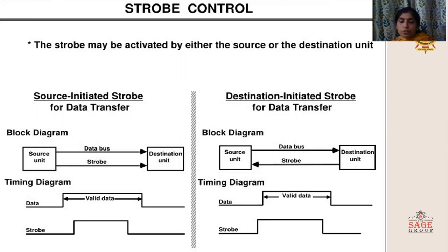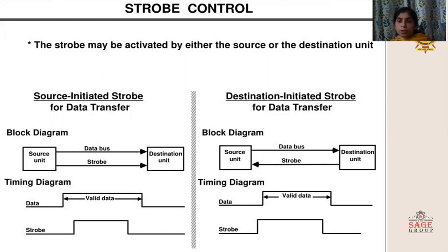In case of destination-initiated strobe, first the strobe signal will be initiated by the destination unit to indicate that it is now ready and the source can send the data. Then after that strobe signal, the source unit will start to send the data. The falling edge of the strobe signal indicates that the valid data transmission will now stop.